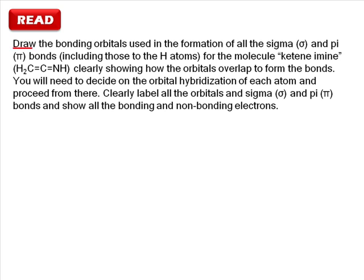We need to draw the orbitals used in the formation of all the sigma bonds, those are end-on overlap of orbitals, and pi bonds, those are side-on overlap of orbitals, for the molecule ketenamine, and show how the orbitals overlap to form bonds.